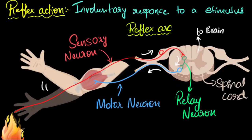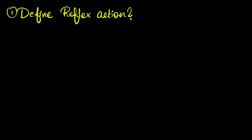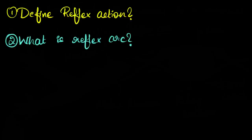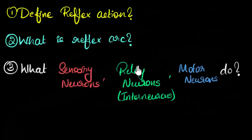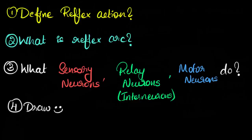That's it — time to recall what we just learned. Can you define what a reflex action is? What is a reflex arc? Can you tell what sensory neurons, relay neurons — which are also called interneurons — and motor neurons do? And finally, can you try drawing the entire reflex arc? If you try to recall this now, you will be able to remember it much longer. If you're stuck anywhere, you can always go back and re-watch the video.